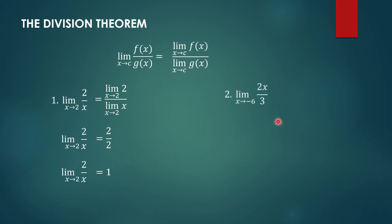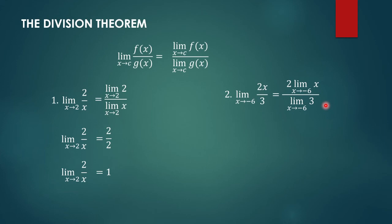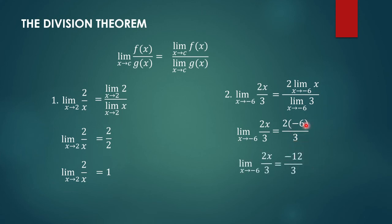Another example: the limit of 2x over 3 as x approaches negative 6. This can be written as 2 times the limit of x as x approaches negative 6 over the limit of 3 as x approaches negative 6. The limit of x as x approaches negative 6 is negative 6, and the limit of 3, which is a constant, is 3. Simplifying, 2 times negative 6 is negative 12 over 3, which equals negative 4.